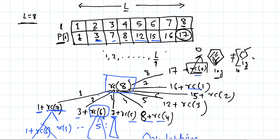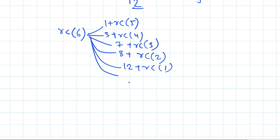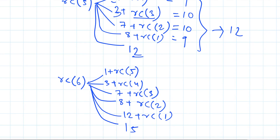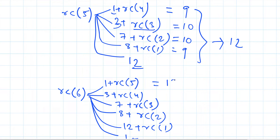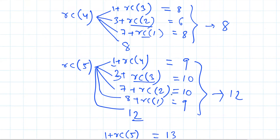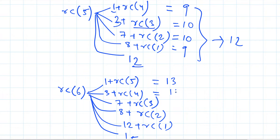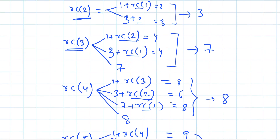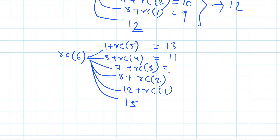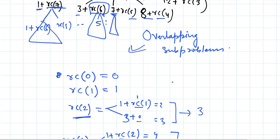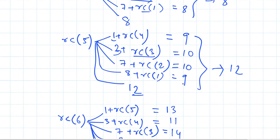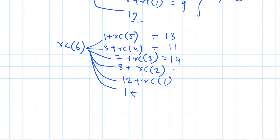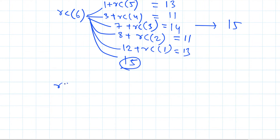For RC(6): one plus RC(5) = thirteen, three plus RC(4) = eleven, seven plus RC(3) = fourteen, eight plus RC(2) = eleven, twelve plus RC(1) = thirteen, and the full six-unit rod is fifteen. The maximum is fifteen, so RC(6) is fifteen.